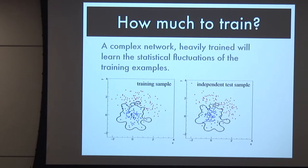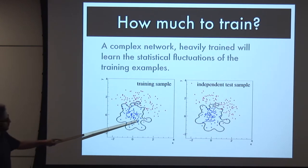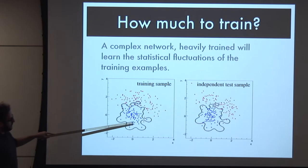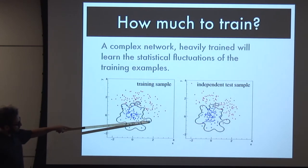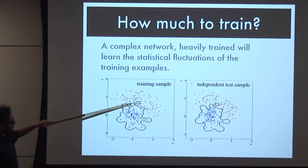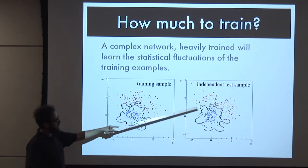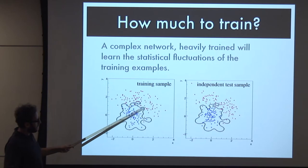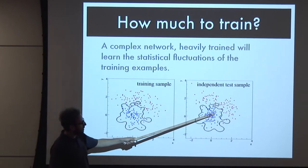But a complex network, if you really train it to learn that these inputs are signal and those are background, it might learn to construct shapes around the particular details of the sample you trained it on. On an independent sample drawn from the same distributions but with unique statistical fluctuations, taking this same boundary might not perform very well.